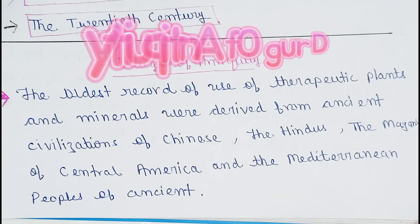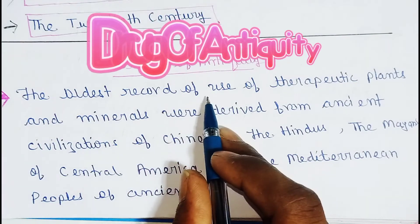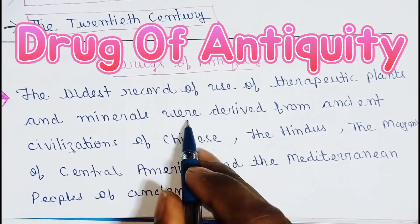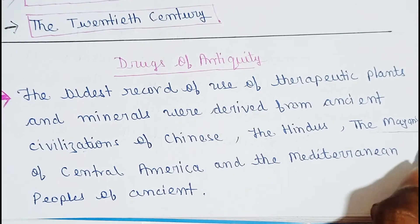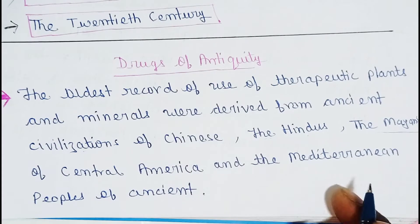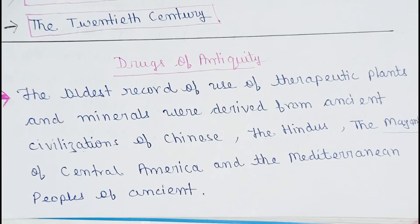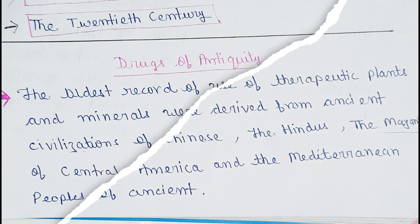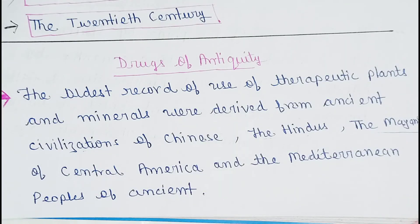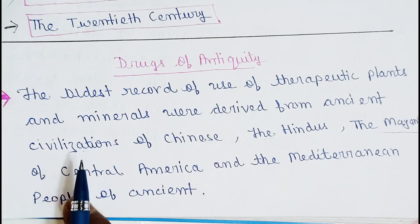The oldest records of use of therapeutic plants and minerals were derived from ancient civilizations — the Chinese, the Hindus, the Mayans, and the Central American and Mediterranean people. These are the people of the drug of antiquity civilization.